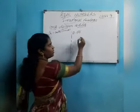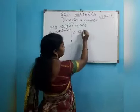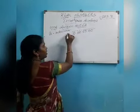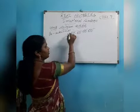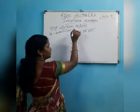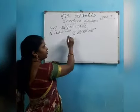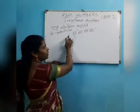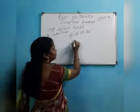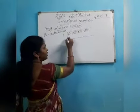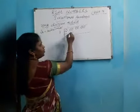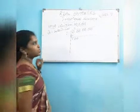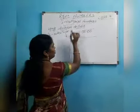Two zeros are considered as 1 decimal point, so for 3 decimals I need to take 3 pairs of zeros. Now, what number should I multiply? The same number should be taken. 1 times 1 is 1. If I had taken 2, then 2 times 2 is 4, which is more than 2, so I take 1. 1 times 1 is 1. Subtract: 2 minus 1 is 1. The point is placed here, so take the point here.